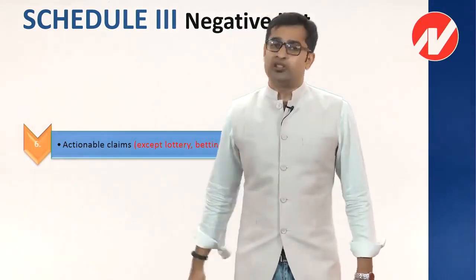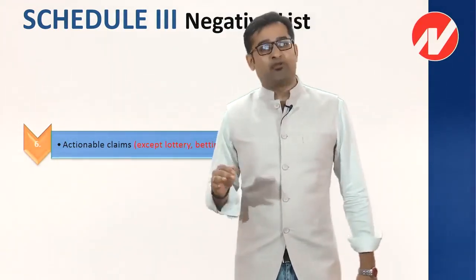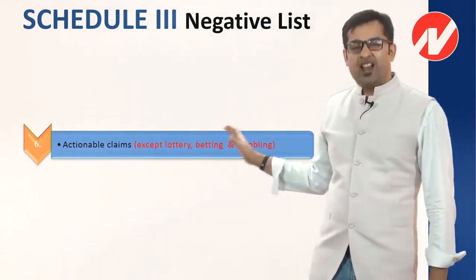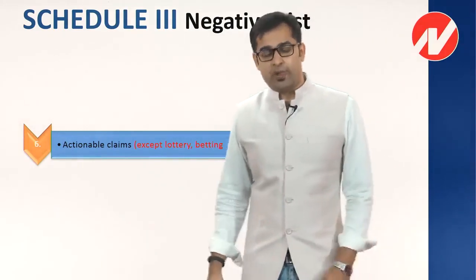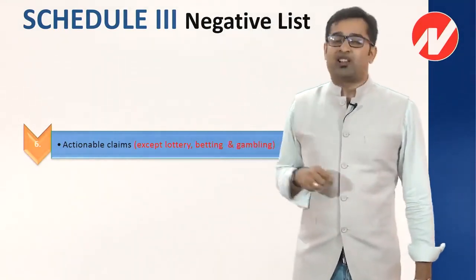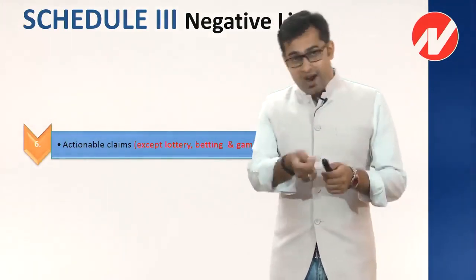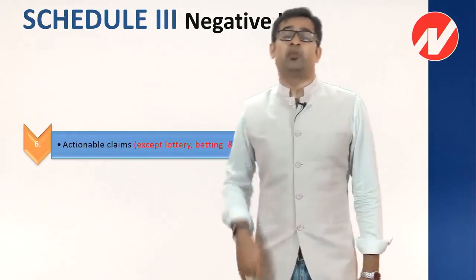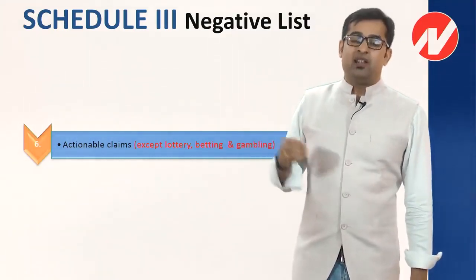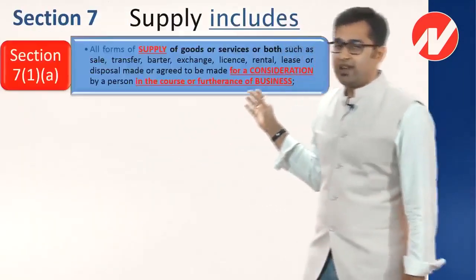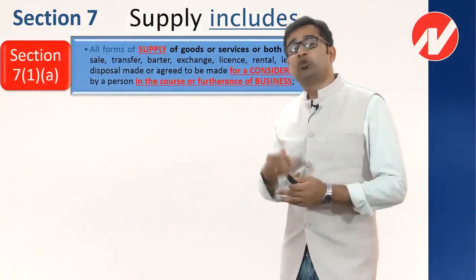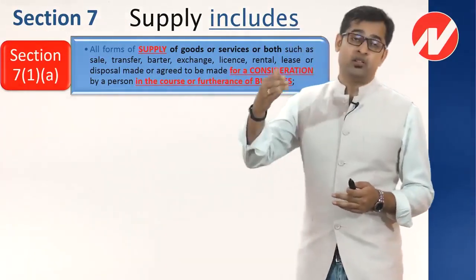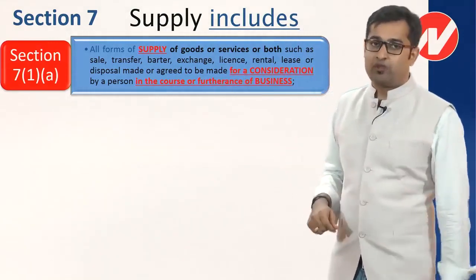So if someone asks whether an actionable claim is goods, the answer is yes. But whether it is supply of goods, the answer is no — except for lottery, betting, and gambling. Now, between buying a lottery ticket and winning a lottery — which one attracts GST? When someone sells a lottery ticket, there is supply, there is consideration, and it is in the course of business. All three conditions are met. But when you win a lottery, you receive money but give nothing in return — there is no supply, consideration, or business activity on your part.